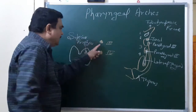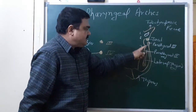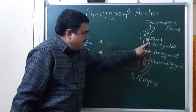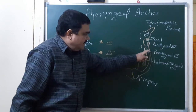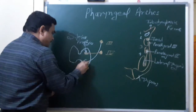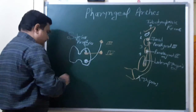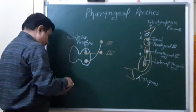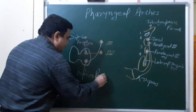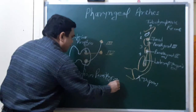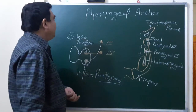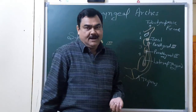Parathyroid third is initially cranial to parathyroid fourth. It descends along with the thymus and occupies a position below parathyroid fourth, forming the inferior parathyroid. This concludes the discussion on the development of the parathyroid gland.